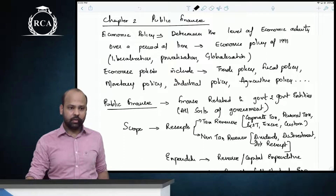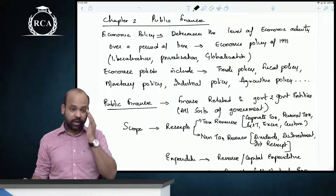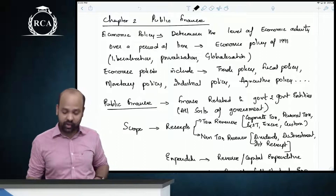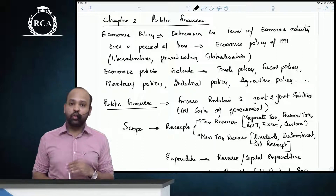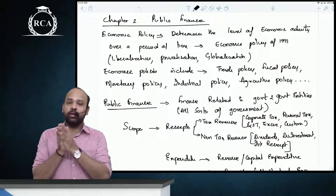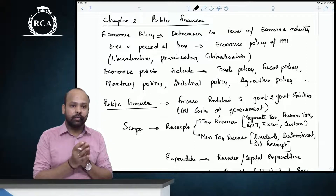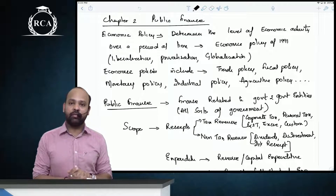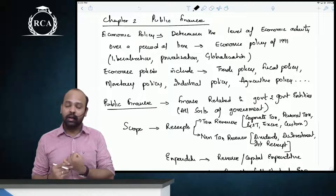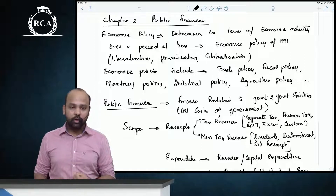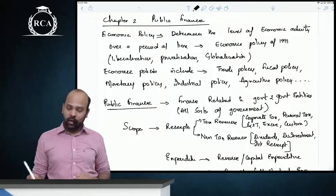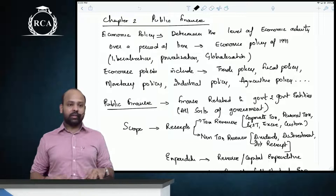Let us revise this chapter on public finance, first unit: fiscal functions. The first thing in this chapter is what is economic policy. Economic policy deals with the pattern and level of economic activity over a specified period of time. Economic policy would cover industrial policy, agricultural policy, trade policy, monetary policies, and fiscal policies.